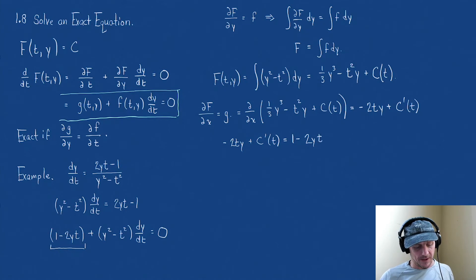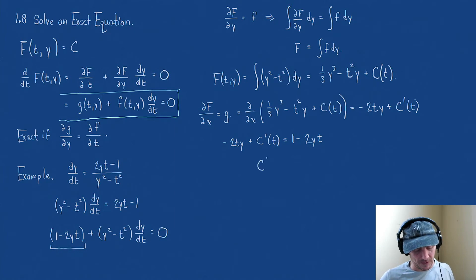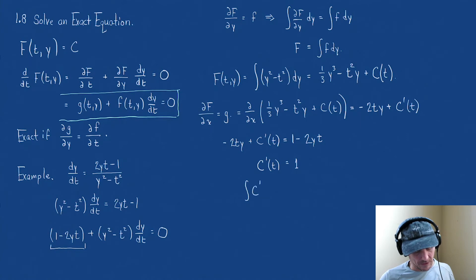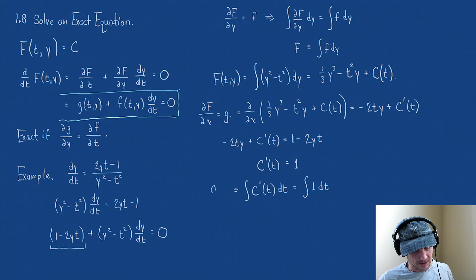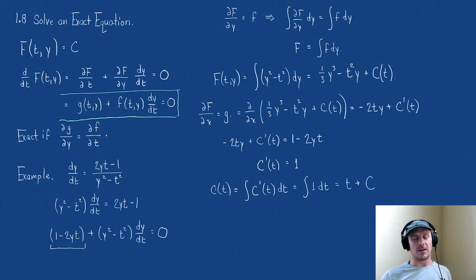Look at that — there's a minus 2ty on both sides, so those cancel. Now we're left with c prime of t equals 1. Taking the integral of both sides, c of t equals t plus a constant, and this time that constant is just a number.